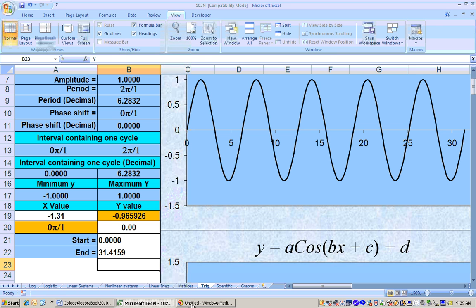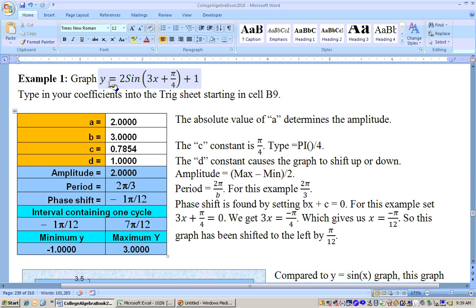And we'll do another more complicated one here. Let's go ahead and graph this one. y equals 2 sine of 3x plus pi over 4 plus 1. You go to the trig sheet and put in these coefficients of 2, 3, then equals pi open parentheses closed parentheses divided by 4. And then it's been moved up one unit.